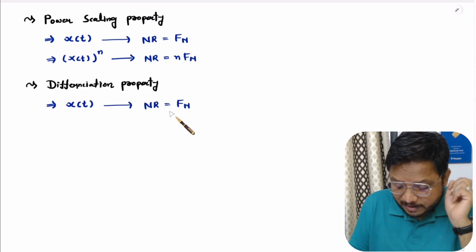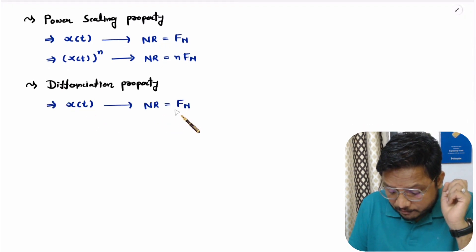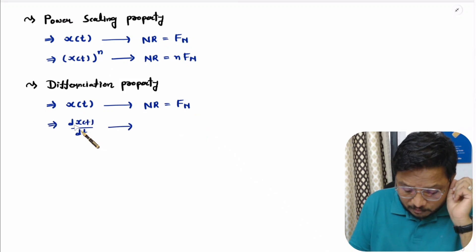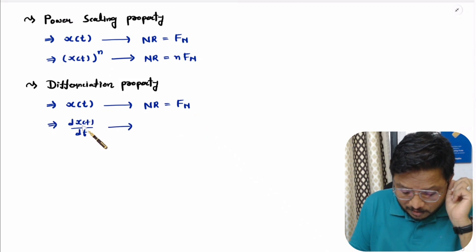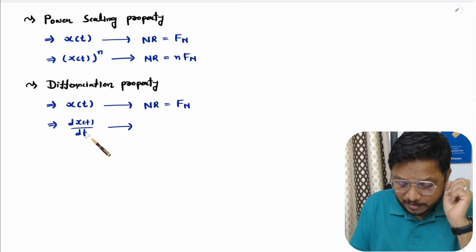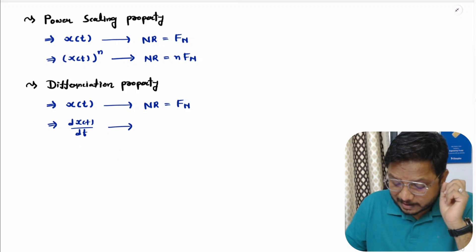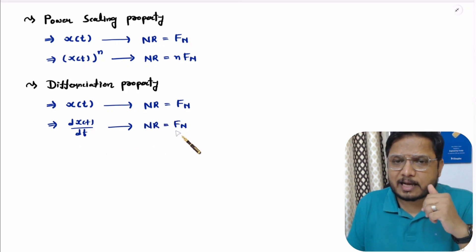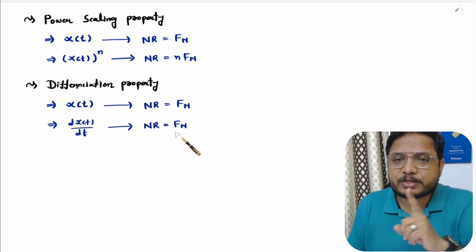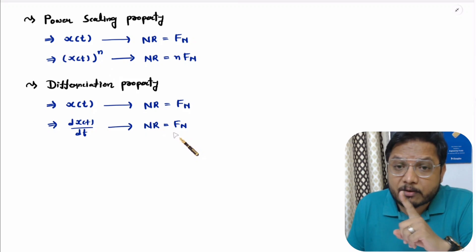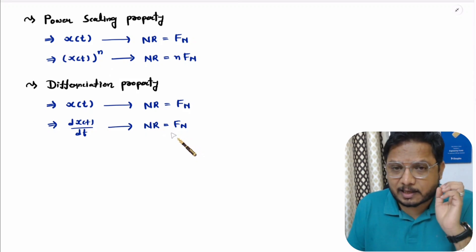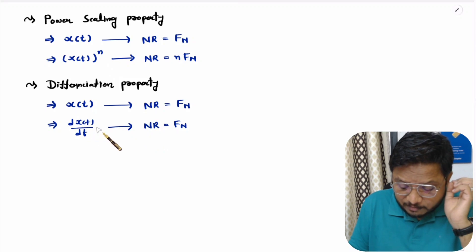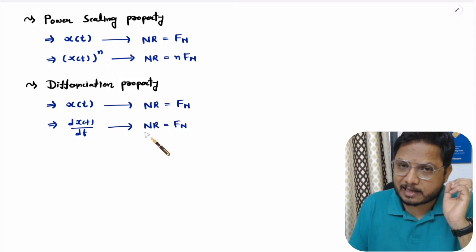Now the differentiation property. If we have original signal x(t) with Nyquist rate fn, then after differentiation — that is, for dx(t)/dt — the Nyquist rate remains fn. The reason is that differentiation does not change the frequency of the original signal, so the Nyquist rate after differentiation remains as it is.